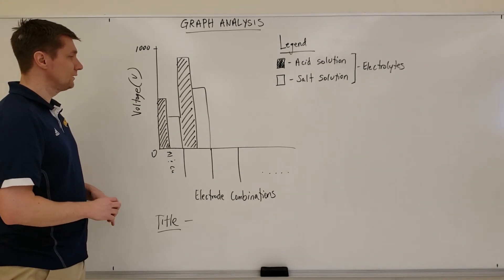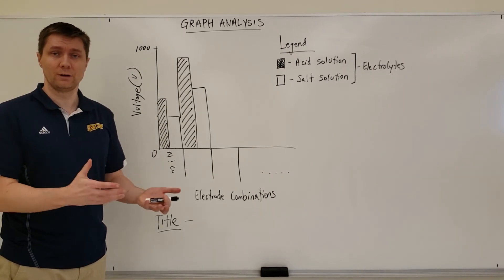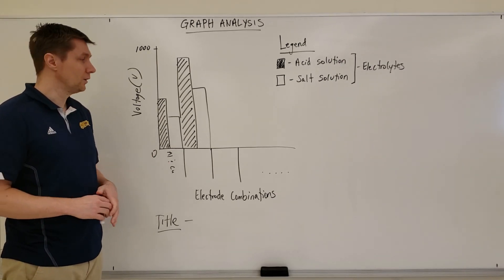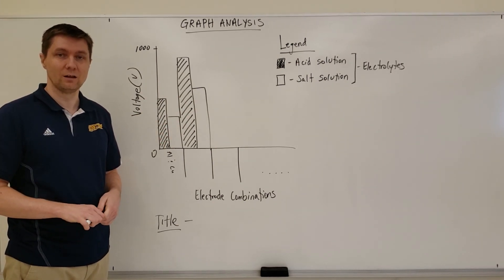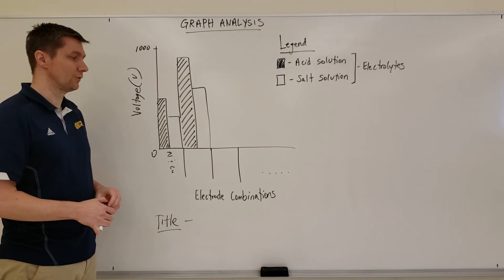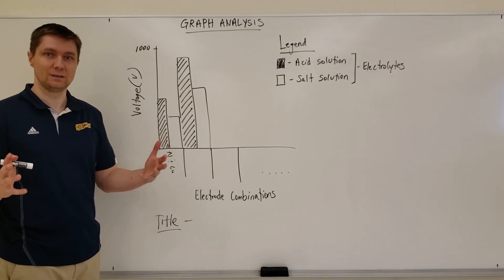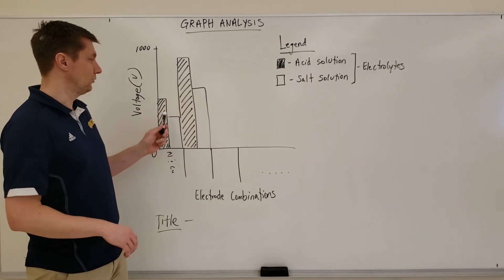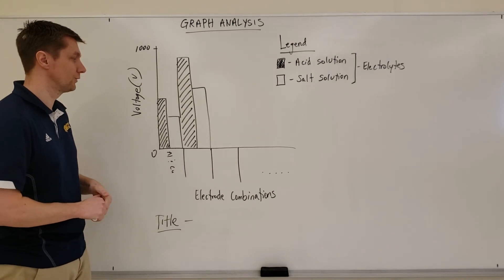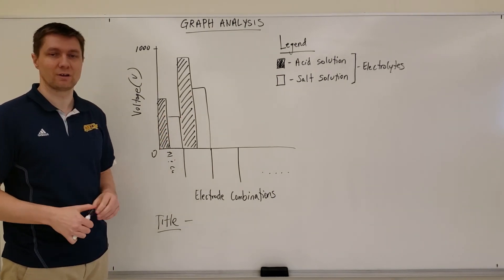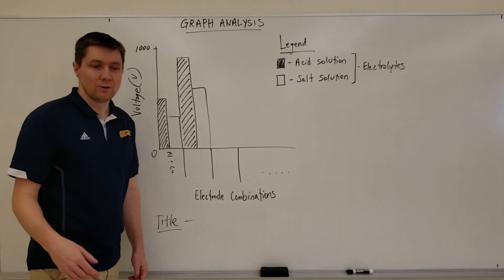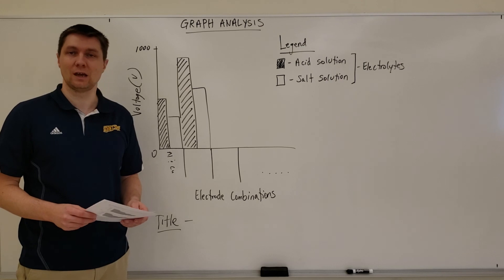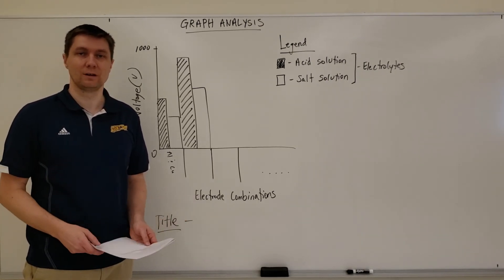Make sure that when you're doing the graph on paper you use a ruler. You can also do your graph on a computer using Microsoft Excel or Google Sheets. If doing it on paper, make sure the bars are colored appropriately so you can distinguish the two electrolytes, and use a ruler. You'll also notice there are conclusion questions at the end of the booklet — make sure to answer those with as much detail as possible, then submit when ready.